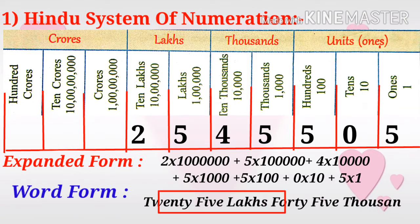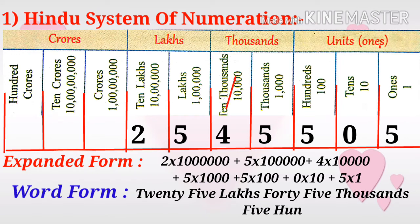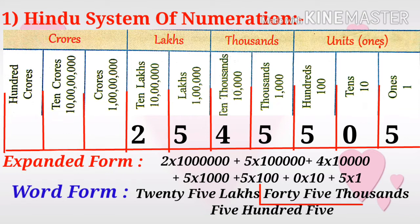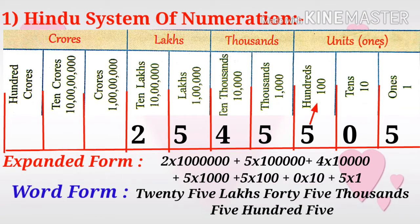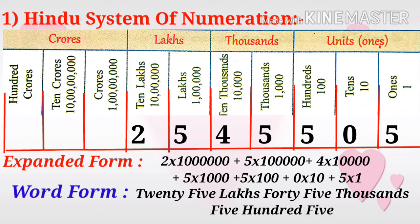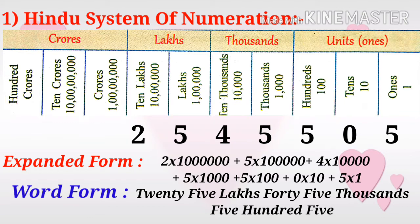In word form: observe that 2 and 5 are in the lakhs place, so twenty-five lakhs. 4 and 5 are in the thousands place, so forty-five thousands. 5 is in the hundreds place, so five hundred. In the tens place there is zero, so we do not write it. In the ones place: five. So the word form is: Twenty-five lakh, forty-five thousand, five hundred and five.